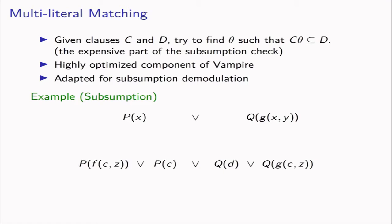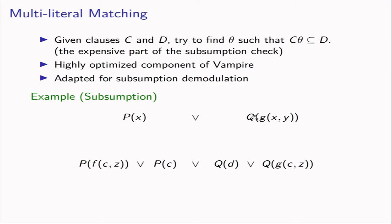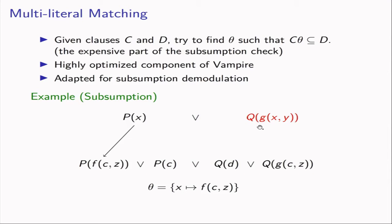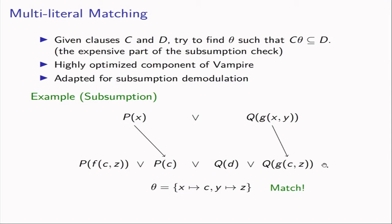To illustrate how matching works in the regular subsumption case: we try to find a substitution theta such that an instance of c is a sub-multiset of d. First we do cheap pre-filtering — for example, a p-literal can only be matched to p-literals. Then we do a backtracking search: we match p(x) to a literal, then discover the second literal cannot be matched because the partial substitution makes it incompatible, so we backtrack, choose the other option for p(x), and successfully match both literals. This means the clause below is redundant and can be deleted.